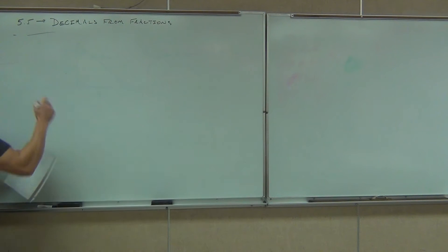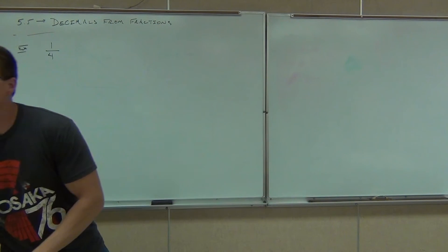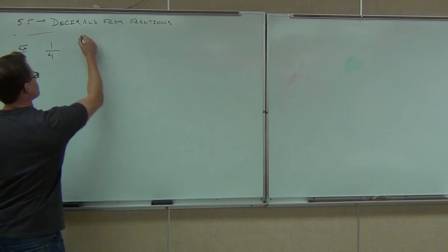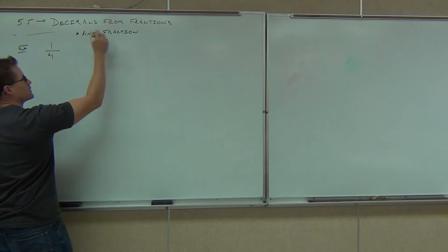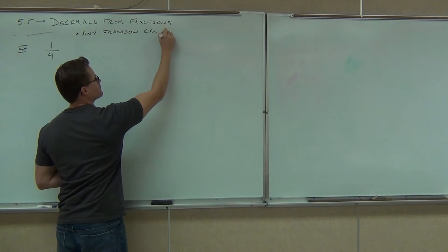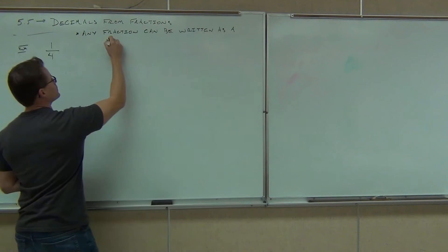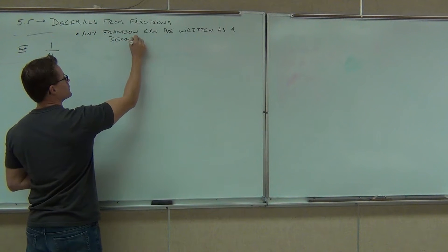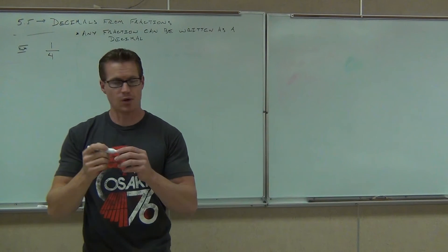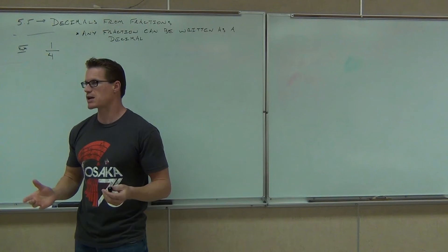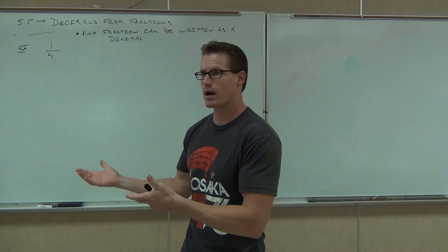Let's talk about the first one. If I have a fraction — now you might be able to do this in your head — but if I have a fraction like one-fourth, we need to know that we can write any fraction as a decimal. Any fraction can be written as a decimal. The reverse, however, is not true. Any decimal cannot be written as a fraction. Some decimals never end and don't repeat, so those ones are called irrational — you cannot write those as a fraction. However, every fraction is either a terminating or non-terminating but repeating decimal, so we can consequently write it as a decimal.